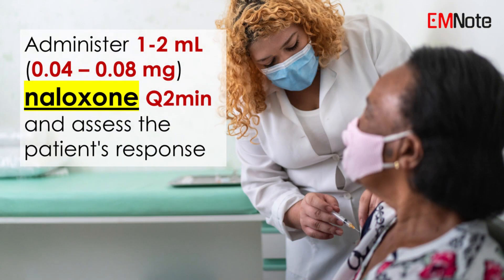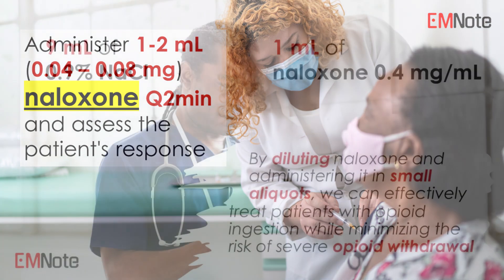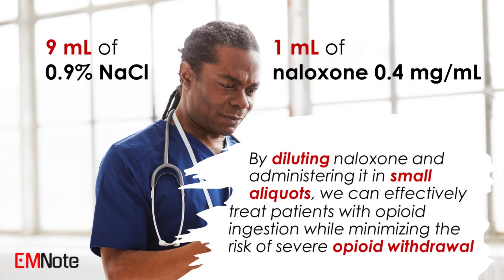Now, administer naloxone 1 to 2 mL (0.04 to 0.08 mg) every 2 minutes and assess the patient's response. By diluting naloxone and administering it in small doses, we can effectively treat patients with opioid intoxication while minimizing the risk of severe opioid withdrawal.